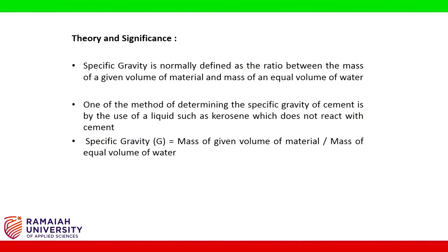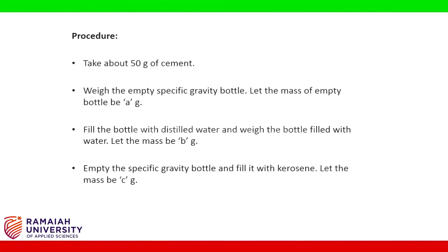Specific gravity (g) is equal to the mass of a given volume of material divided by the mass of an equal volume of water. Procedure: Take about 50 grams of cement. Weigh the empty specific gravity bottle — let the mass of the empty bottle be A grams. Fill the bottle with distilled water and weigh; let the mass be B grams. Empty the bottle and fill it with kerosene; let the mass be C grams.